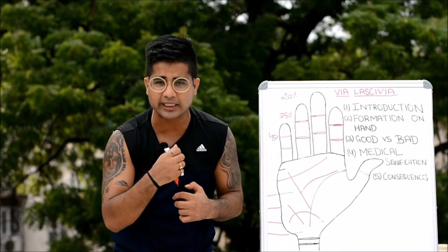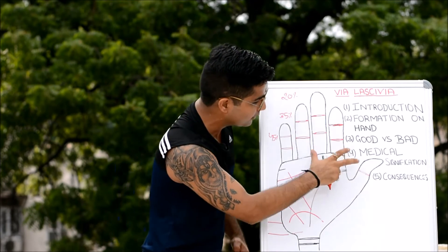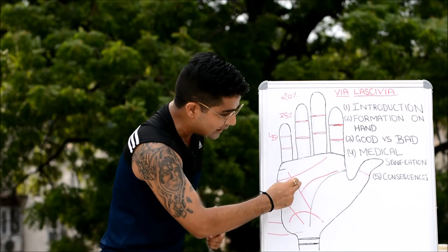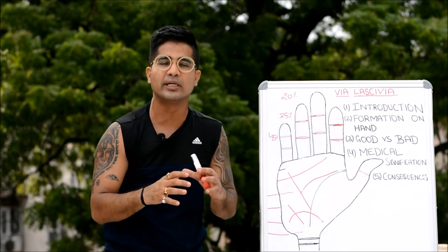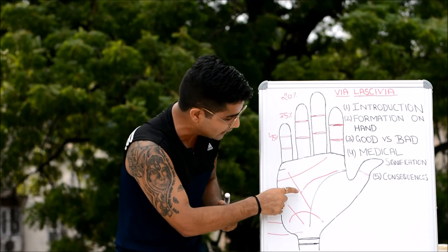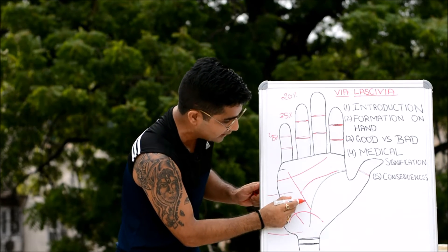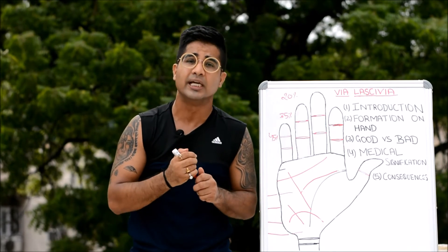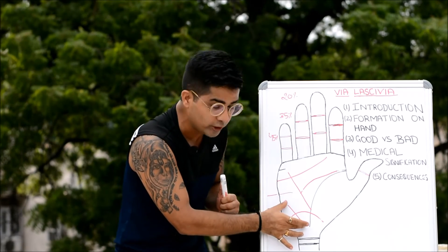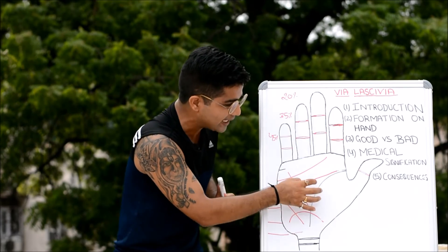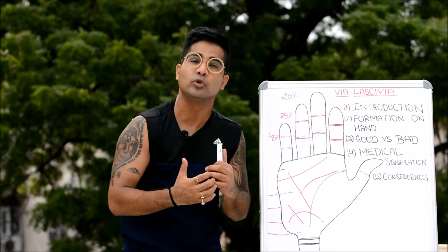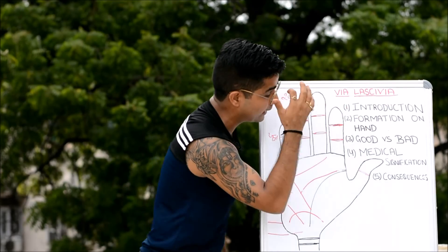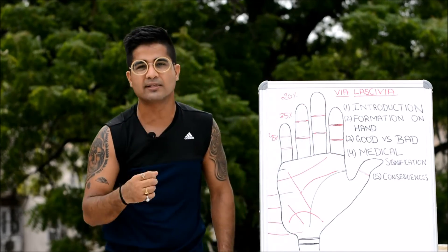On the other hand, if all positive qualities are indicated — the thumb is long and firm, the headline is unaffected, the mount of Venus is in a good state, the line of Mercury is present, and the via lascivia is present — then this is going to give the person good results. In that case, it acts as a sister line to the line of Mercury as well as the lifeline, adding to the vitality in someone's personality and physical constitution.